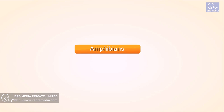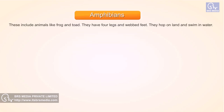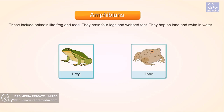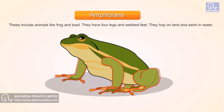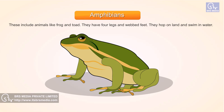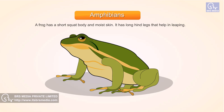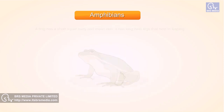Amphibians. These include animals like frog and toad. They have four legs and webbed feet — they hop on land and swim in water. A frog has a short squat body, moist skin, and long hind legs that help in leaping.